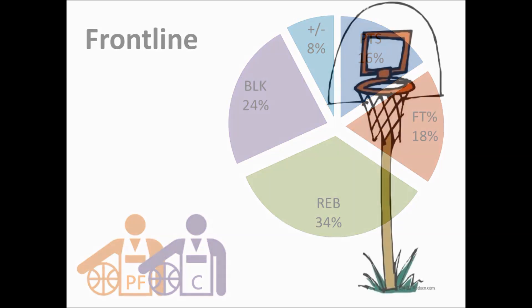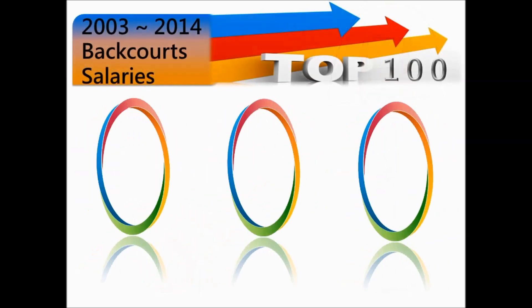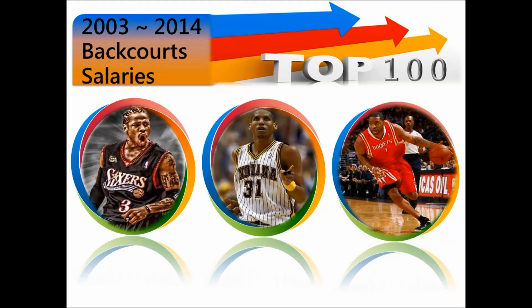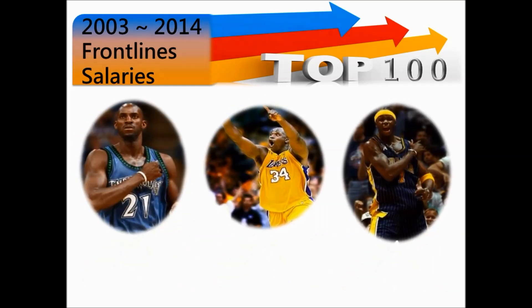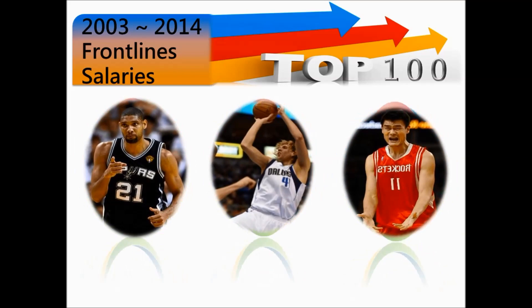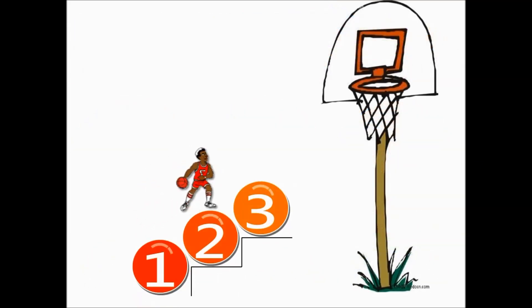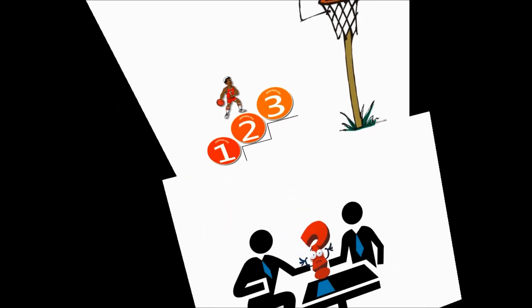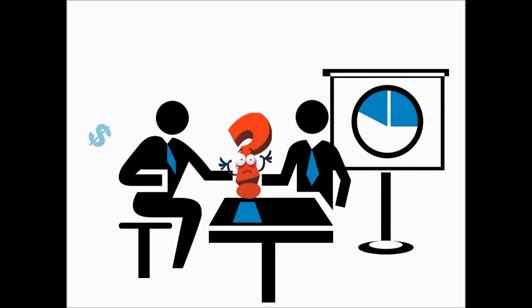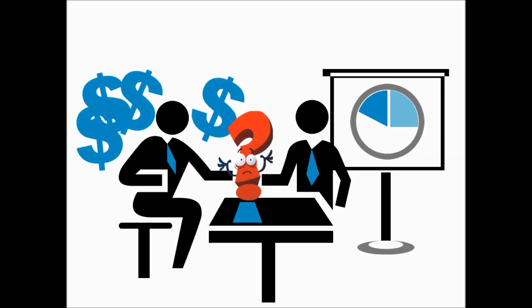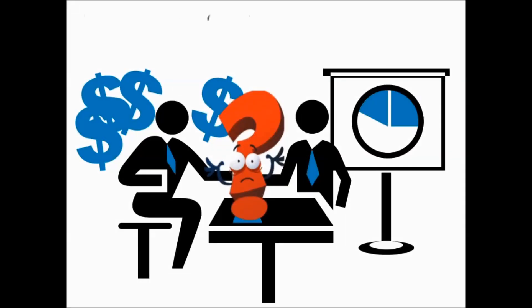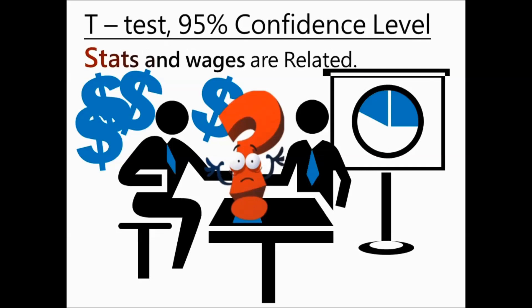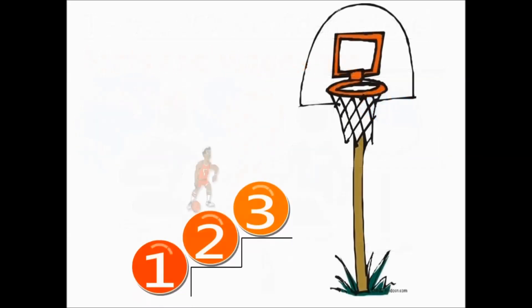Let's move on to see if the results of our research and the perspectives from the fans are identical. We listed the top 100 players who received the highest salaries during the years 2003 to 2014 individually, and ranked and classified those players by the amount of their wages, into backcourt and frontline. We applied correlation coefficients to check the impact on each other, calculating the relationship level between each stat and wages using Excel, and conducted a hypothesis test using a t-test with a confidence level of 95%. We can then find whether stats and wages are related, and draw a proper conclusion.